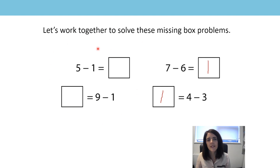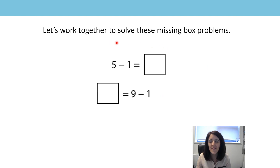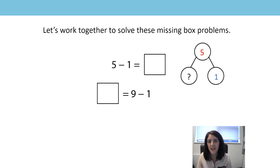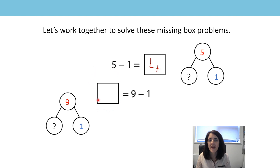Let's have a think about these ones. Five subtract one equals four, because four is one less than five. And for the next one with the missing box: nine subtract one is eight, so eight equals nine subtract one, because eight is one less than nine.